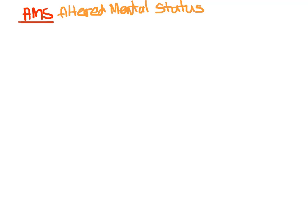We're going to talk about altered mental status, or AMS. As the name implies, altered mental status is any change from the normal mental state, so this could mean really almost anything. We need to have an organized approach to altered mental status.